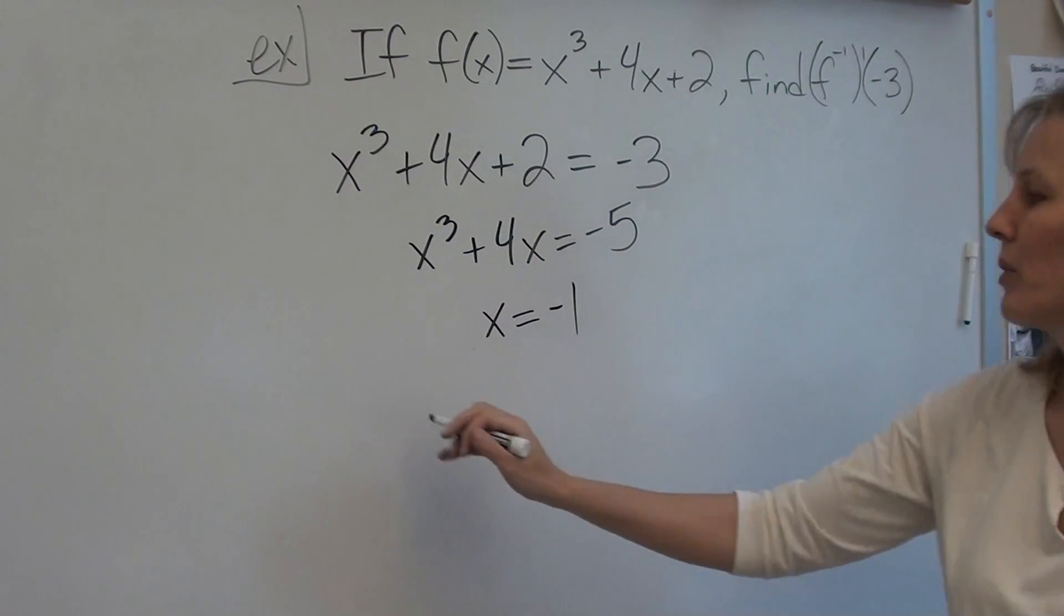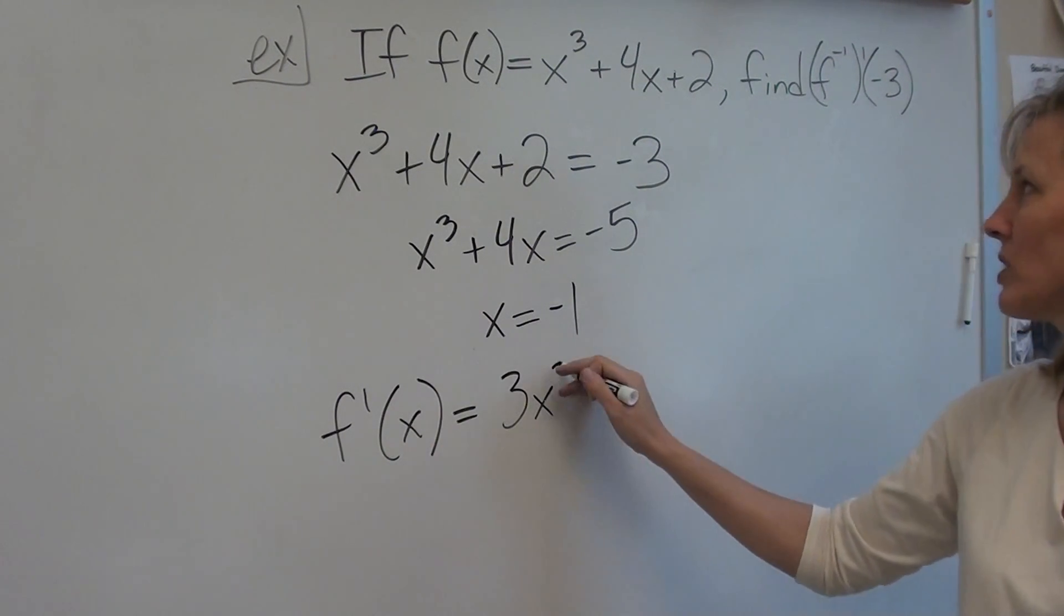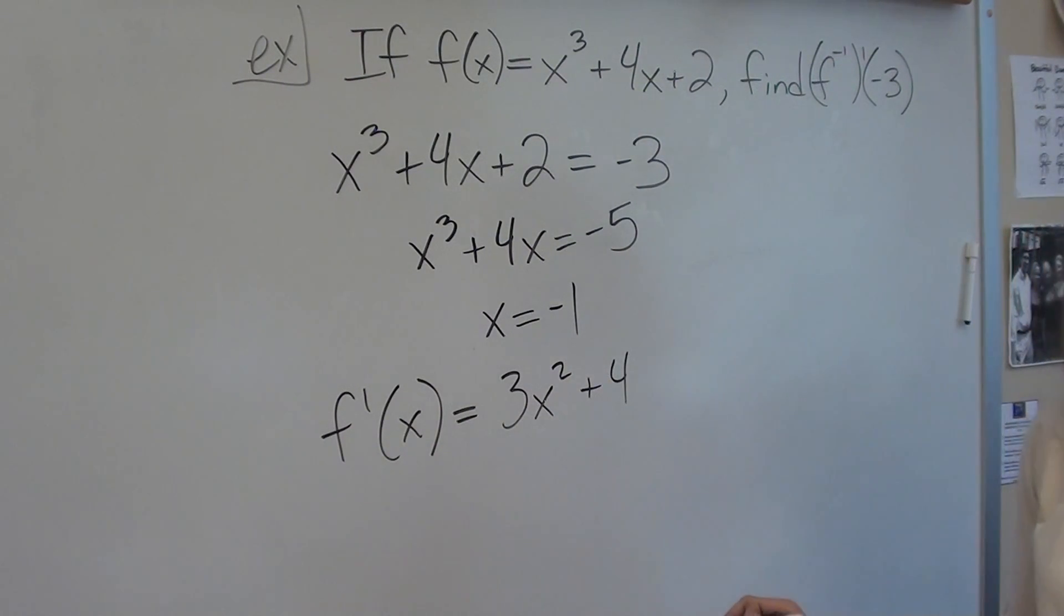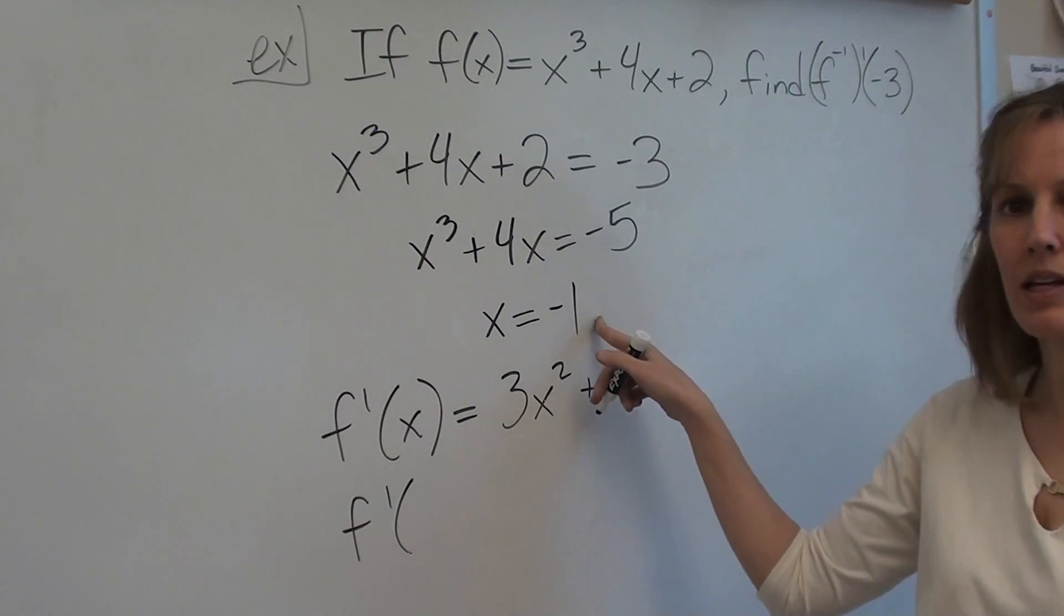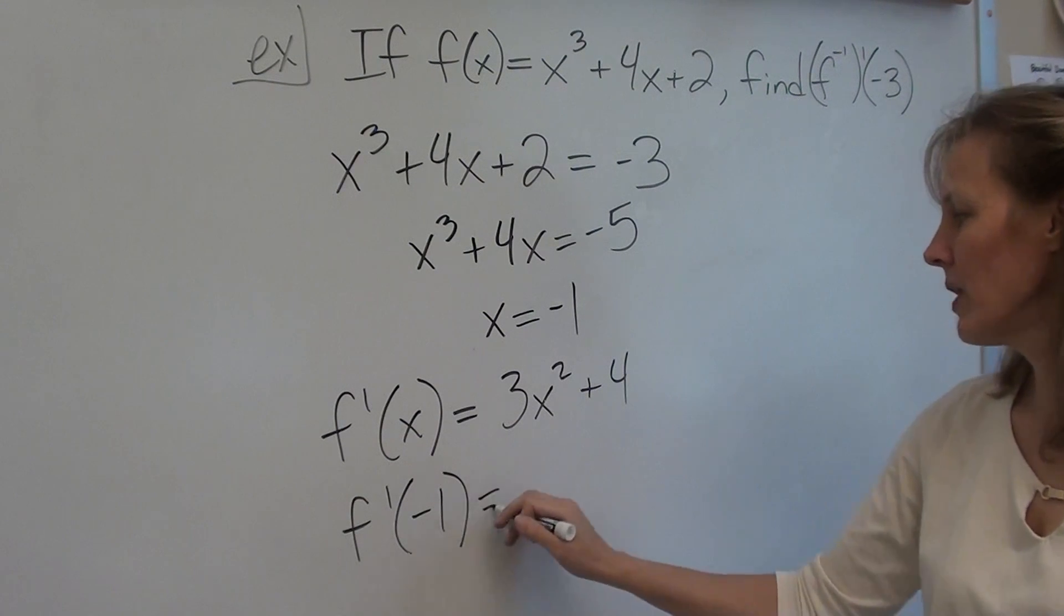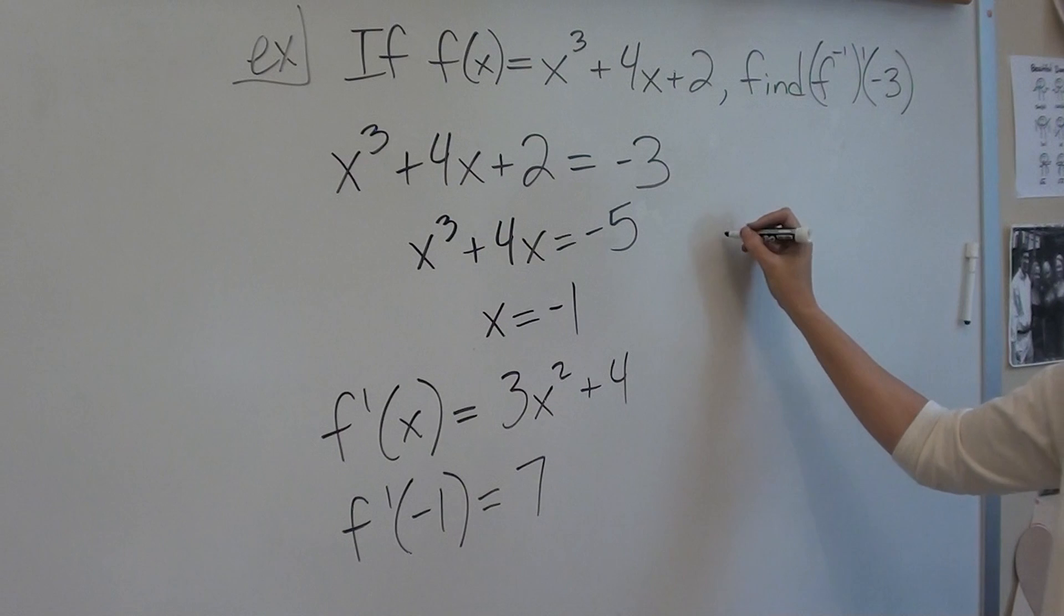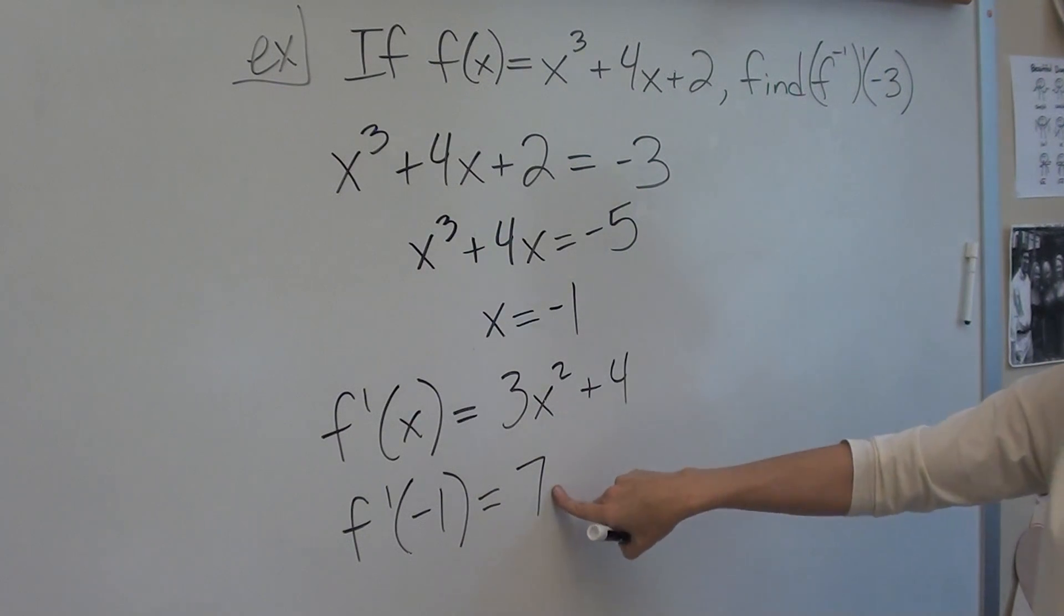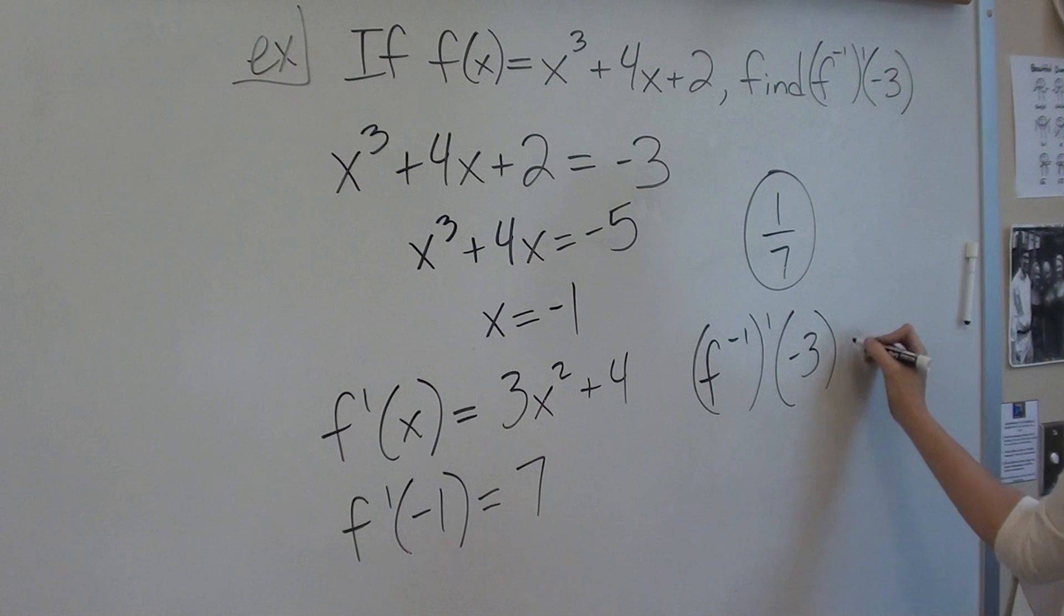The next step that we have to do is find f prime. So we find f prime, which is 3x squared plus 4. Then we take the number that we just found, negative 1, plug it in to f prime, so we get 7. And then the final answer is, you take this and you take the reciprocal, 1 7th. So that means that f inverse prime of negative 3 is 1 7th.